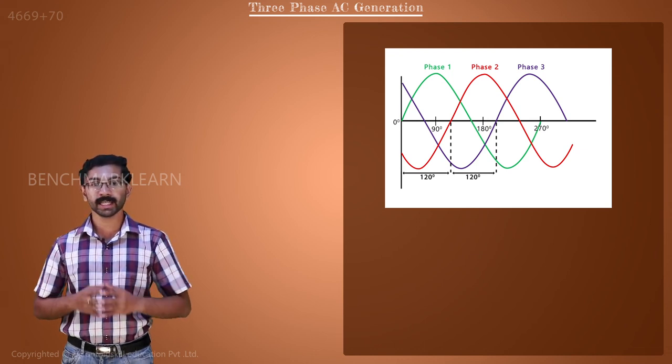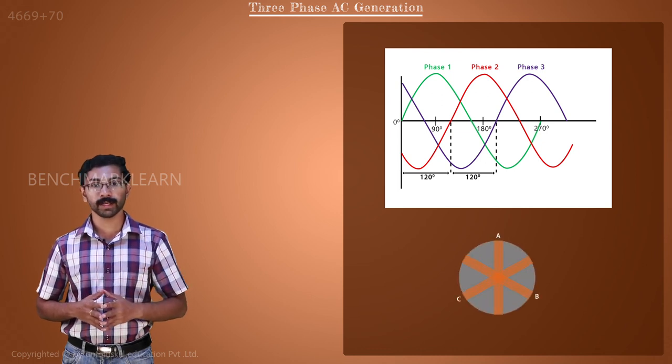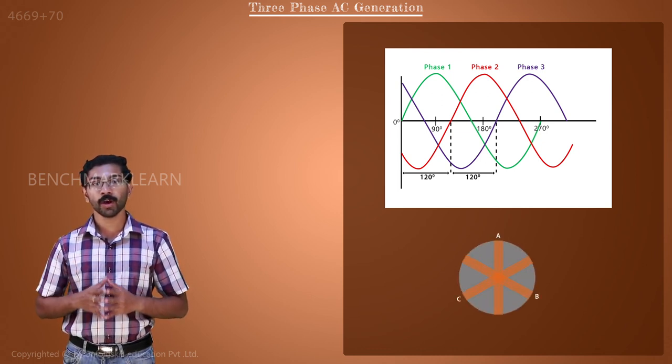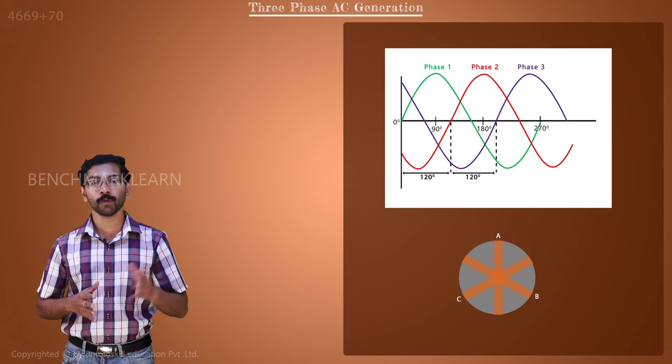To generate three-phase AC, the generators have three sets of coils. These coils will be spaced 120 degrees apart to one another.